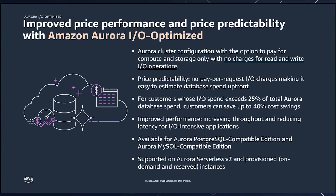To address these concerns and give customers a predictable bill with a better price performance option, we launched Amazon Aurora IO Optimized, a new cluster configuration. In this configuration, you do not pay for any read and write operations — you only pay for compute and storage. Compute can include Serverless V2 and provisioned instances, and storage remains pay-as-you-go. Customers using Global Database will still continue paying for replicated IOs, as that is not a standard read and write operation. Without any IO charges, it's much easier to estimate your database spend upfront, whether you're an existing customer bringing on new workloads or migrating to Aurora for the first time.